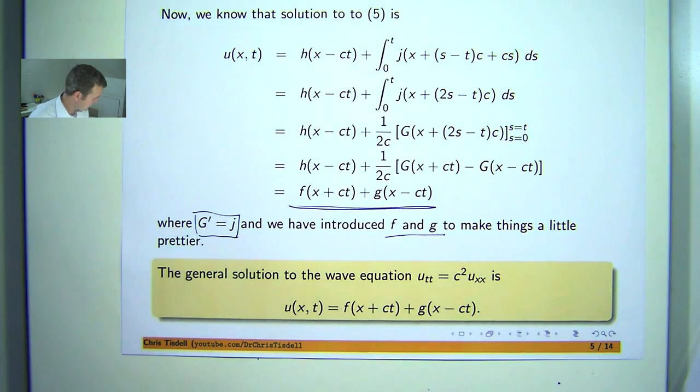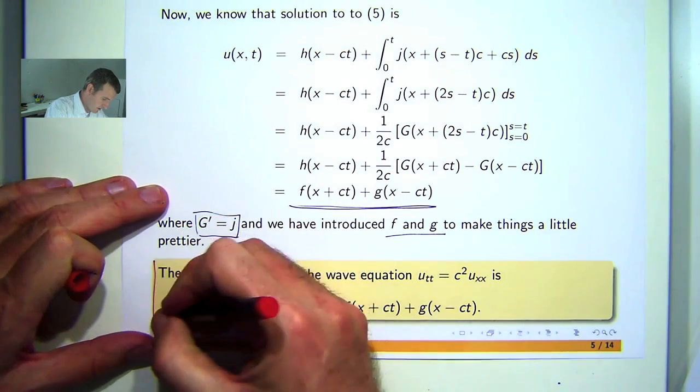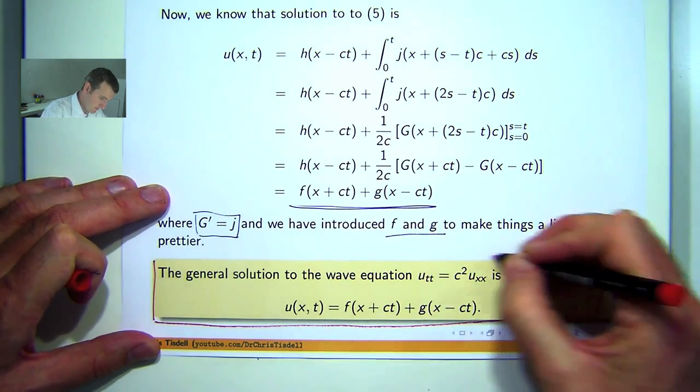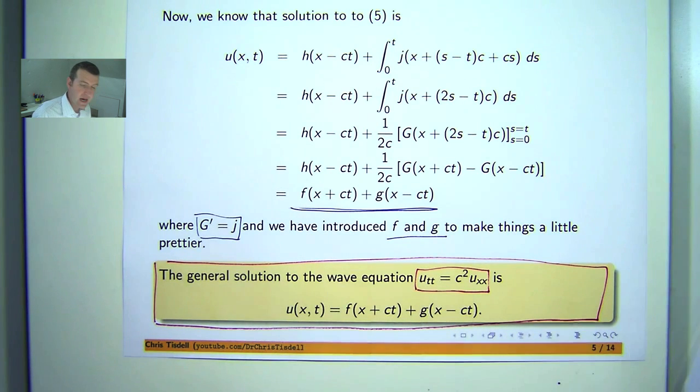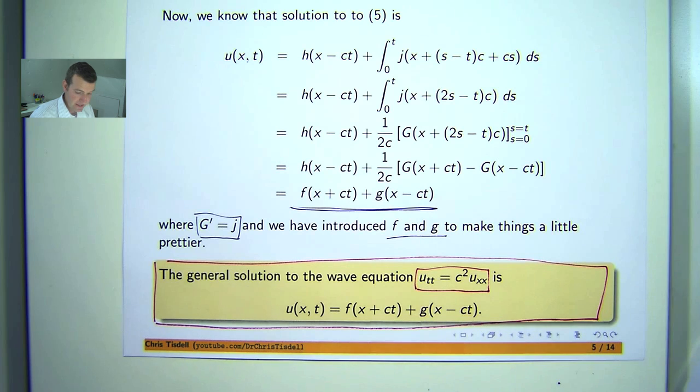So what do we have here? We now have a general solution to our special equation known as the wave equation. Here f and g are arbitrary but differentiable functions. Now if you want to verify that this actually does satisfy this problem, use the chain rule, differentiate to find utt and uxx, and you'll see that this really does satisfy the PDE that we've been looking at.